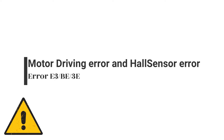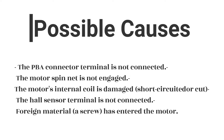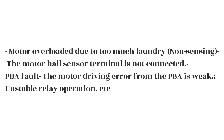Error E3 and B3E possible causes: the PBA connector terminal is not connected, the motor spin net is not engaged, the motor's internal coil is damaged (short circuit or cut), the hall sensor terminal is not connected, foreign material or a screw has entered the motor, motor overloaded due to too much laundry, non-sensing, PBA fault, or weak/unstable relay operation. Error BE occurs due to erroneous operating signals from the motor hall sensor.